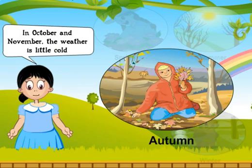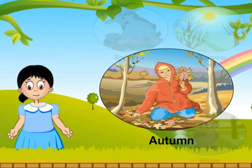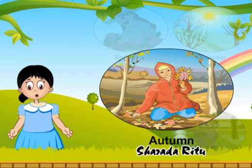In October and November, the weather is a little cold, trees shed their leaves, and we go to school wearing a sweater. This season is called the Autumn season, the fall, or Sharda Ritu.